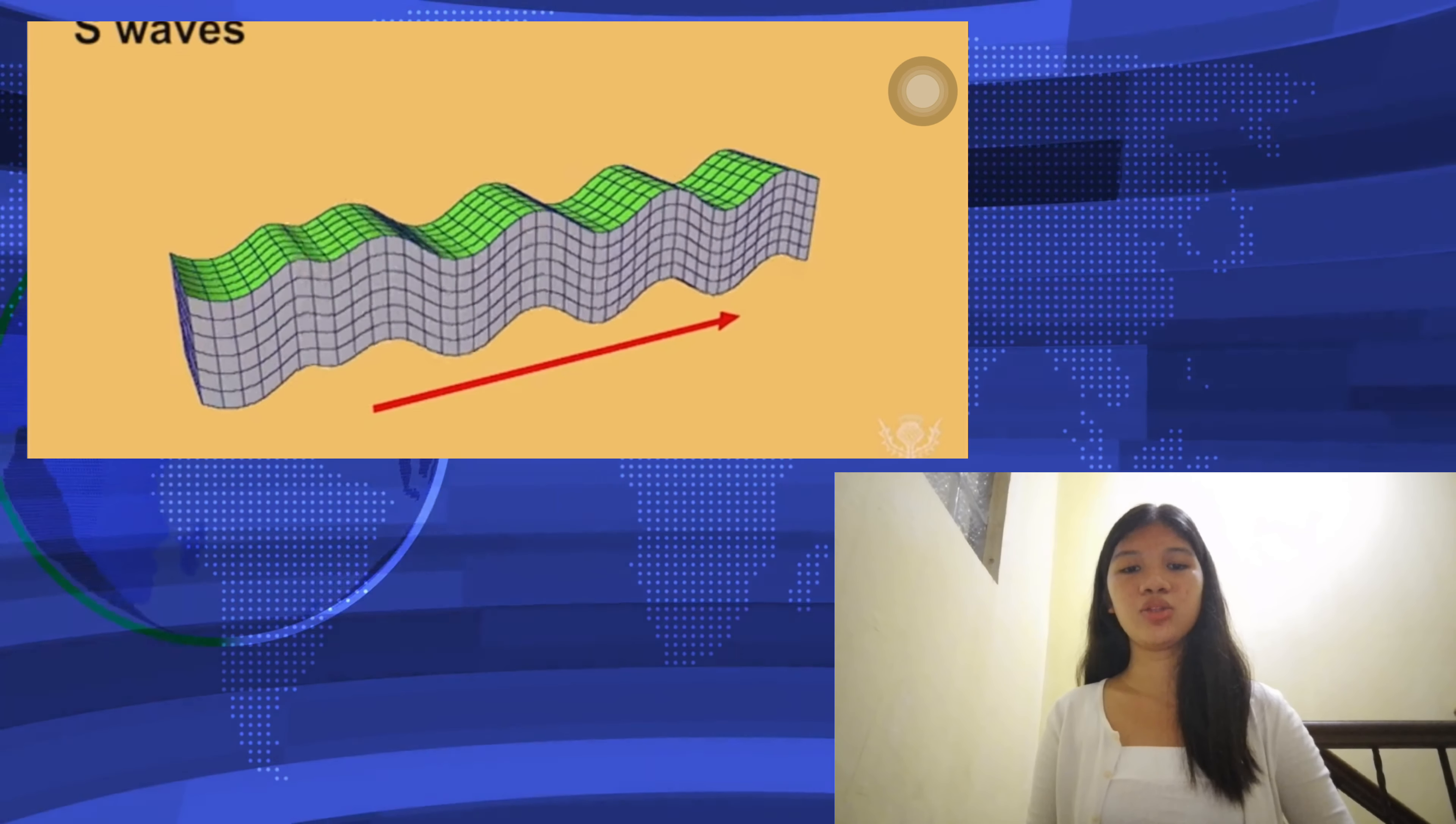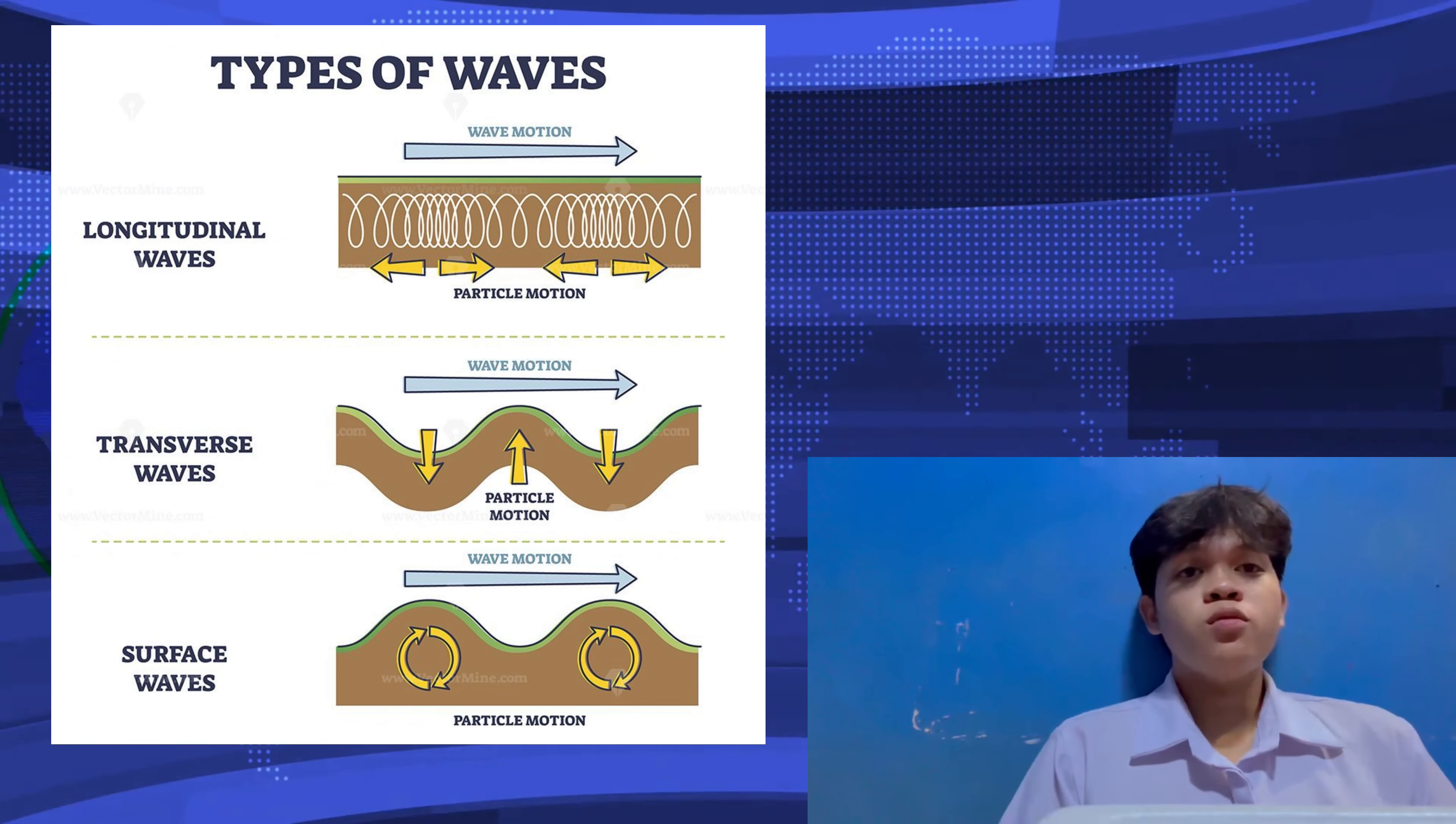Finally, surface waves travel along earth's surface and cause the most intense shaking. They are responsible for significant damage during earthquakes.